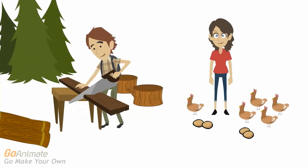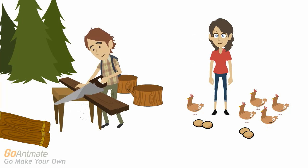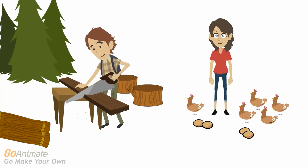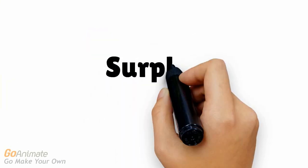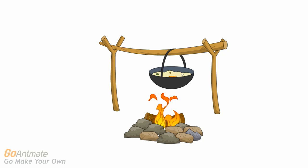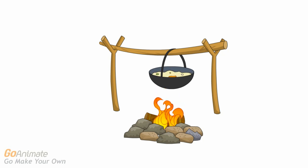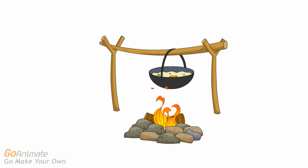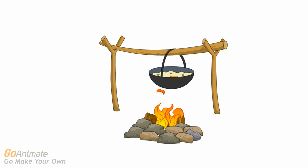Billy is a lumberjack and Mary is an egg farmer. After chopping down many trees, Billy soon has more wood than he needs. Similarly, Mary soon has more chickens and more eggs than she can eat. That means they have a surplus. Billy, after chopping down all the trees, is now very hungry and would very much like some food, and Mary would like some firewood so she can cook her food. And thus, a trade will develop between Billy and Mary.